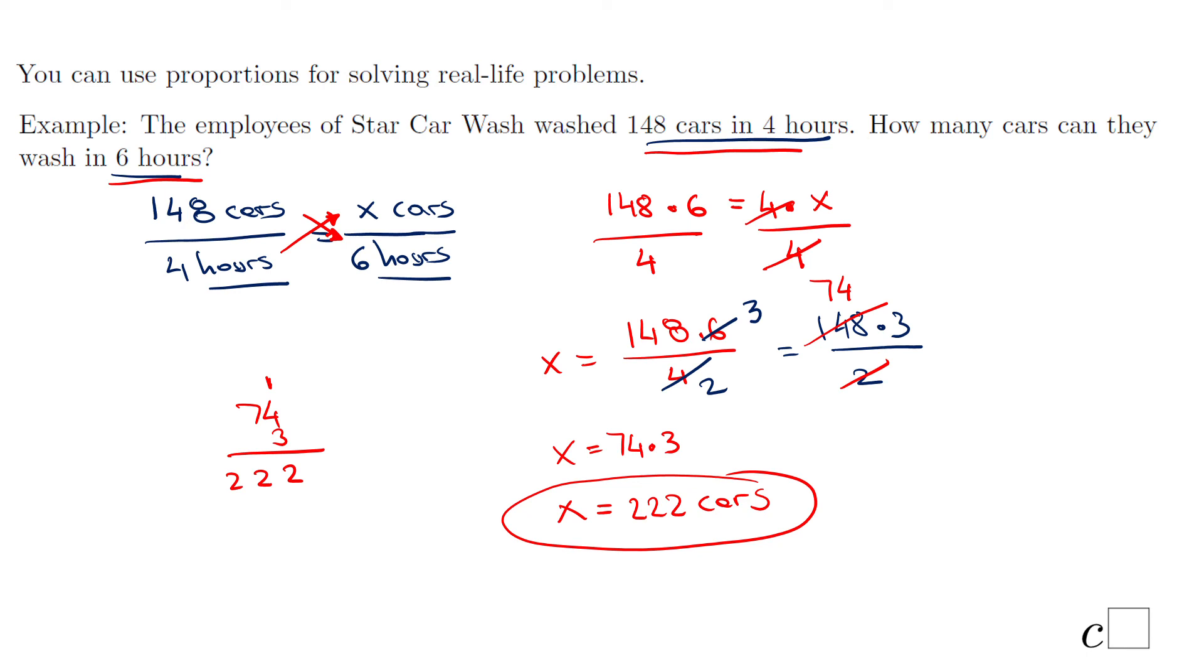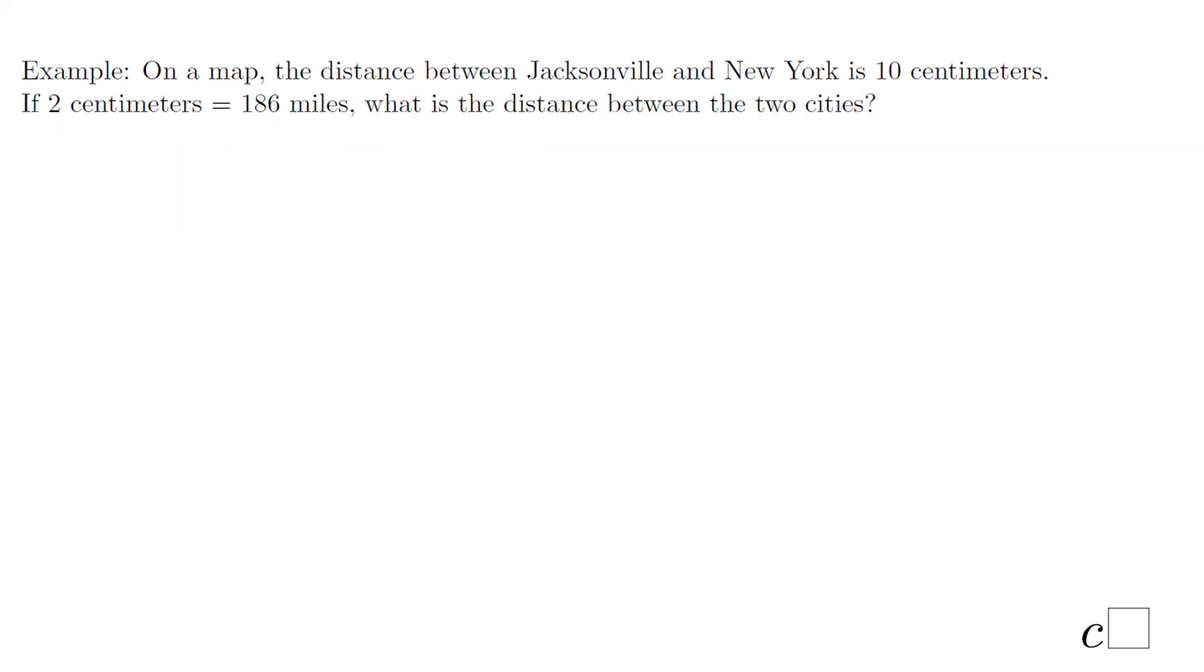A last example where we can use proportion: on a map, the distance between Jacksonville and New York is 10 centimeters. If 2 centimeters equals 186 miles, what is the distance between the two cities? You notice here we have what we call a scale. On that map, 2 centimeters means 186 miles. On that map, we can measure the distance, and that is 10 centimeters. I put the units here and I am consistent. Centimeters and centimeters are in the numerator, miles and miles in the denominator.